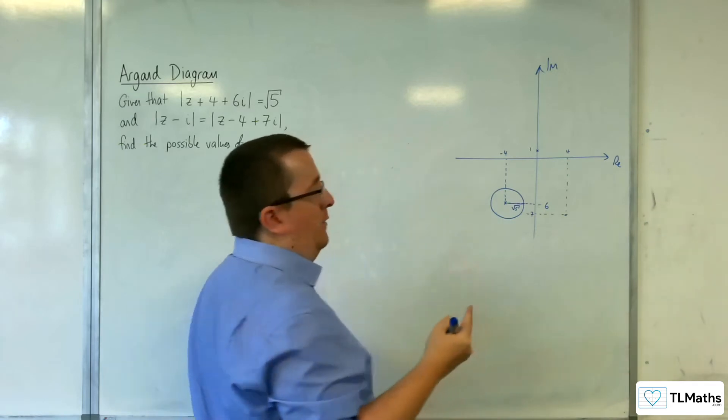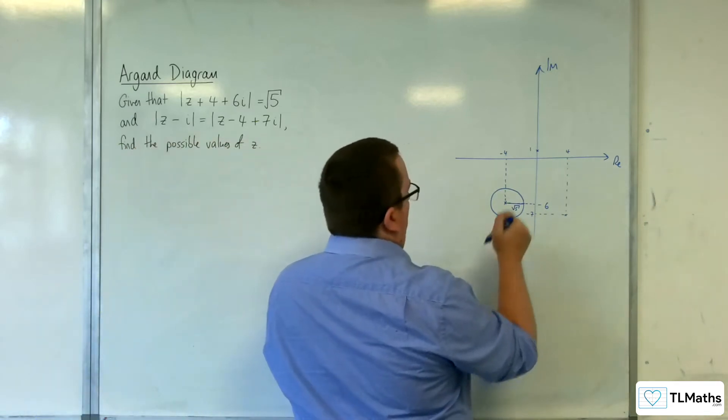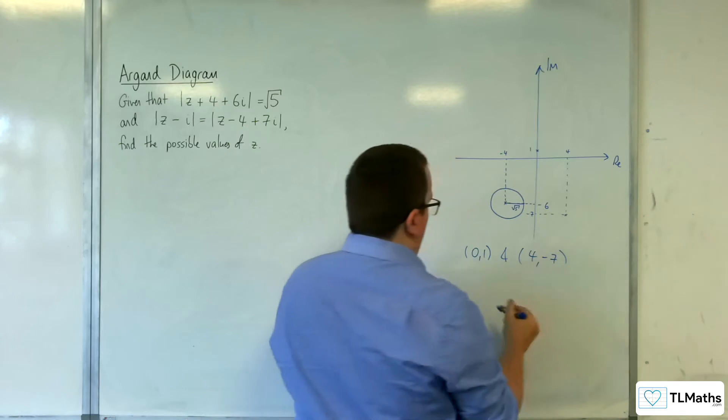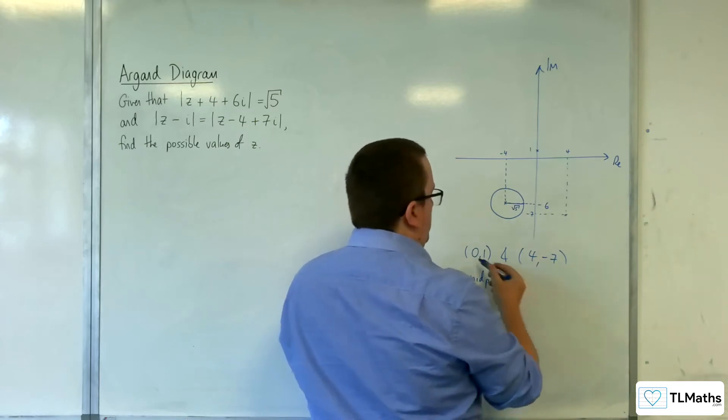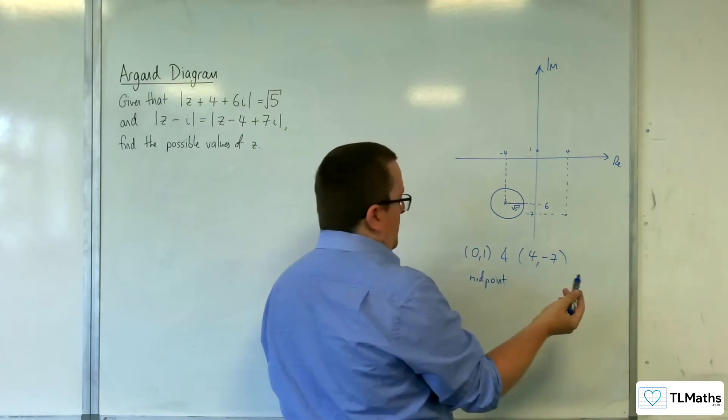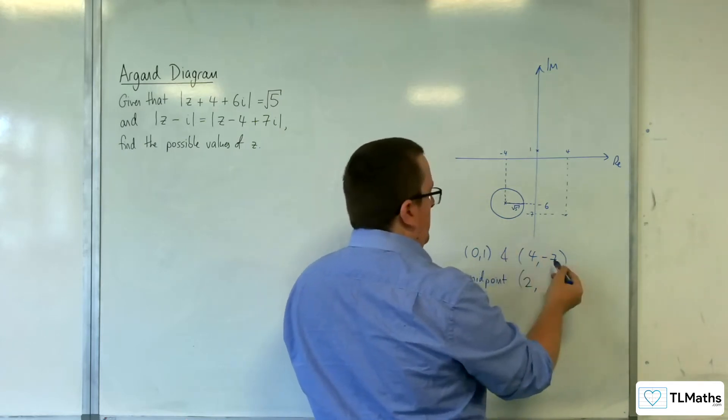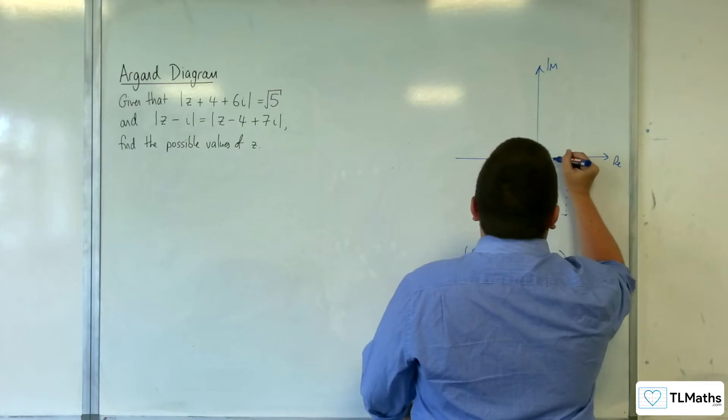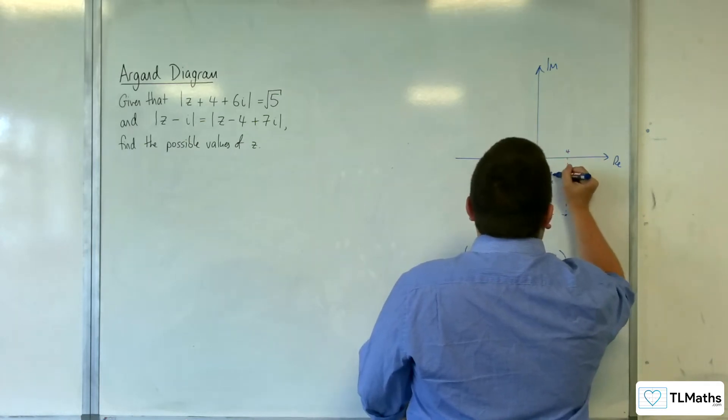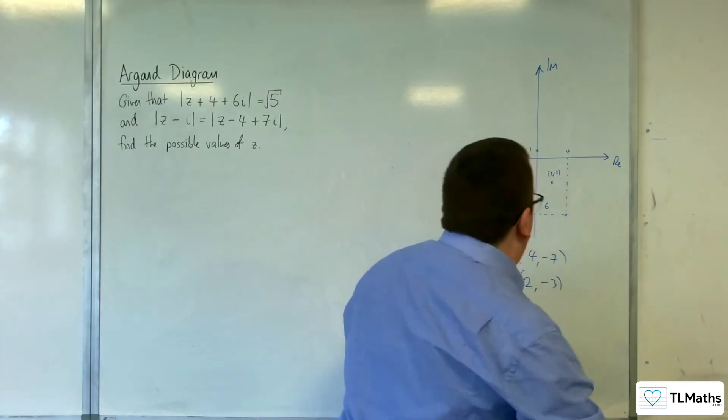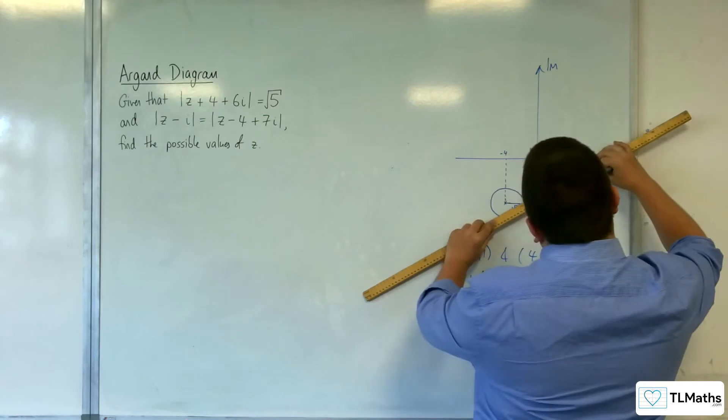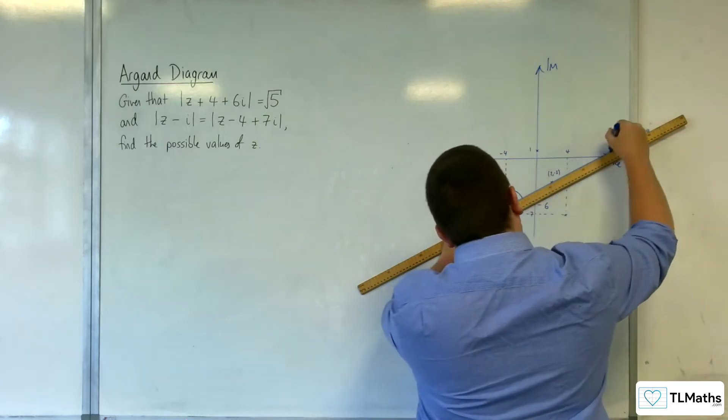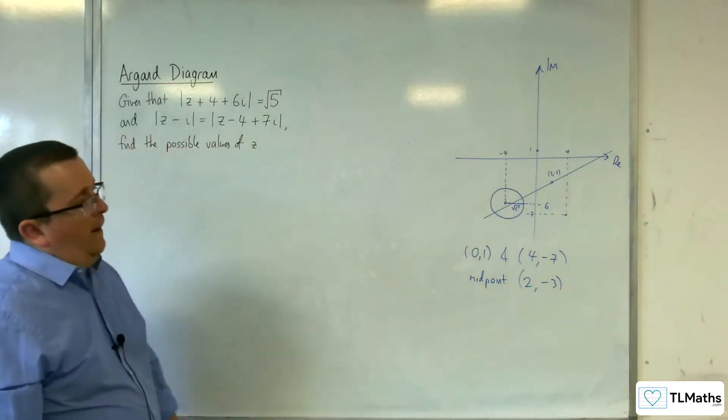So if we find out the midpoint, then we've got 0, 1 and we've got 4 minus 7. So the midpoint is going to be 0 plus 4 divided by 2 is 2, and 1 plus minus 7 is minus 6 divided by 2 is minus 3. So 2 minus 3, so something like here. And so our line is going through something like this. And I'm assuming it's going to intersect our circle at two points.